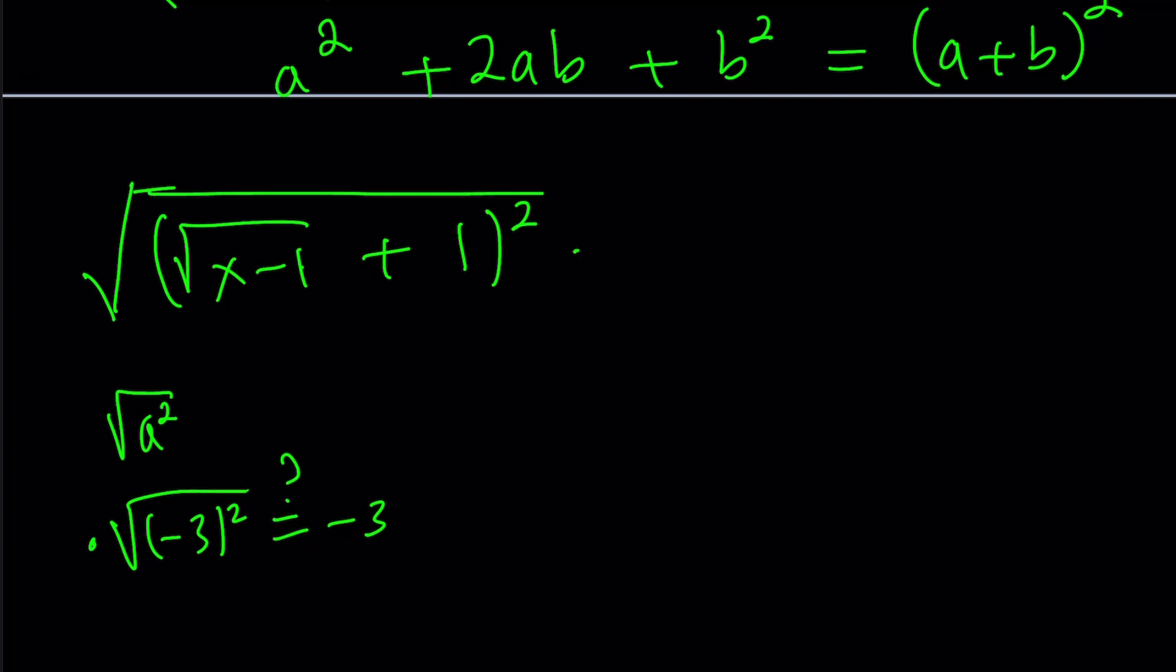Therefore, this is already positive. So I don't need... By the way, I didn't say what this was. This is the absolute value of it. You already know this, right? So this is already positive. So I'm just going to write it as square root of x minus 1 plus 1. And that is going to be our answer.